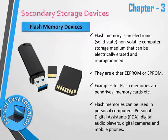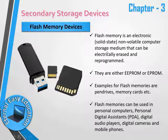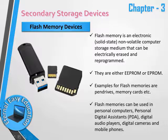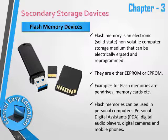Flash memory is an electronic non-volatile computer storage medium. It is a permanent memory — it does not evaporate when the power is off. The data can be electrically erased and re-programmed. Flash memory can store up to 181 GB and is used in memory cards and pen drives in mobile phones and digital cameras.